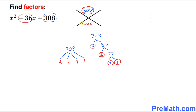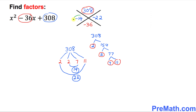Pair up the prime factors: 2 times 7 is 14, and 2 times 11 is 22. And 14 plus 22 equals 36 — that's what we needed. Write 14 and 22, then fix the signs: since the middle term is negative 36, both must be negative. Negative 14 times negative 22 gives positive 308, and negative 14 plus negative 22 gives negative 36.